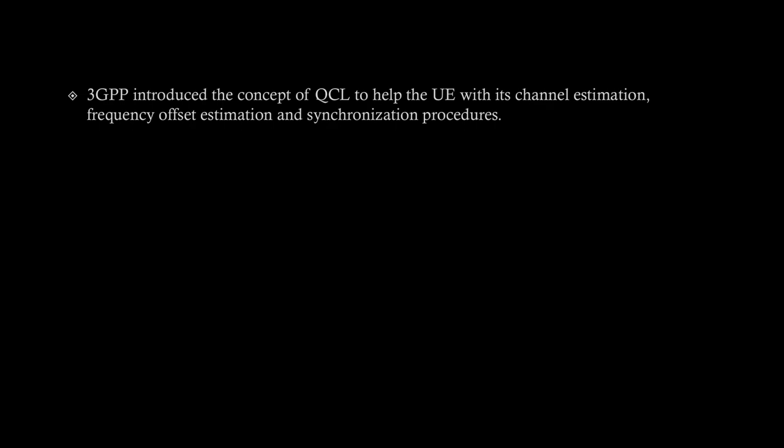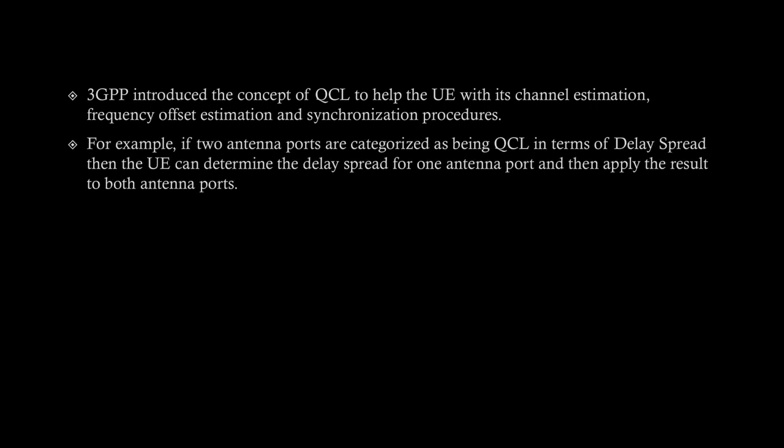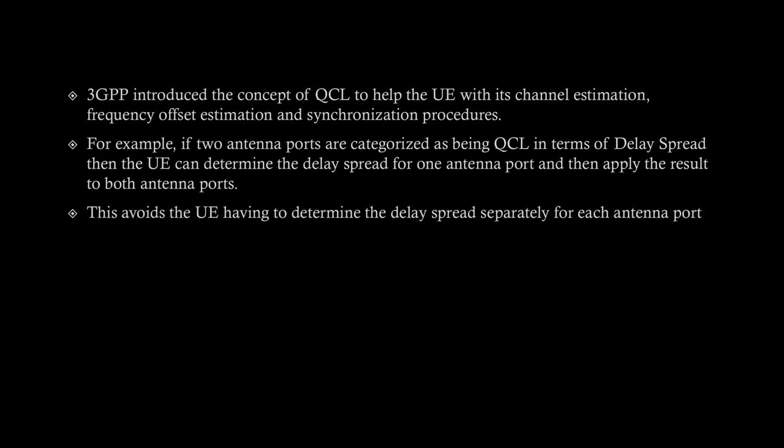3GPP introduced the concept of quasi co-location to help the UE with channel estimation, frequency offset estimation, and synchronization procedures. For example, if two antenna ports are characterized as QCL in terms of delay spread, the UE can determine the delay spread for one antenna port only and apply the same result to both — reducing computational effort and avoiding the need to estimate delay spread separately for each antenna port.